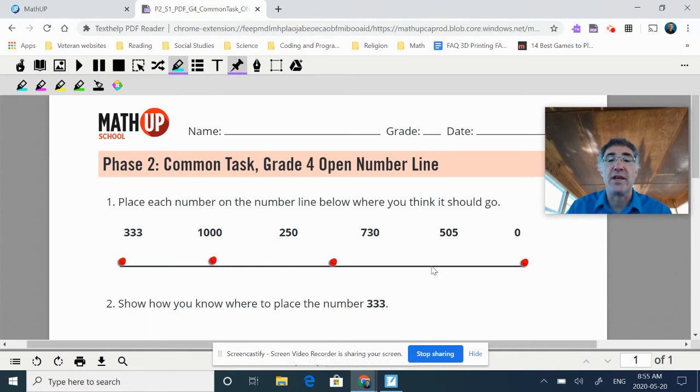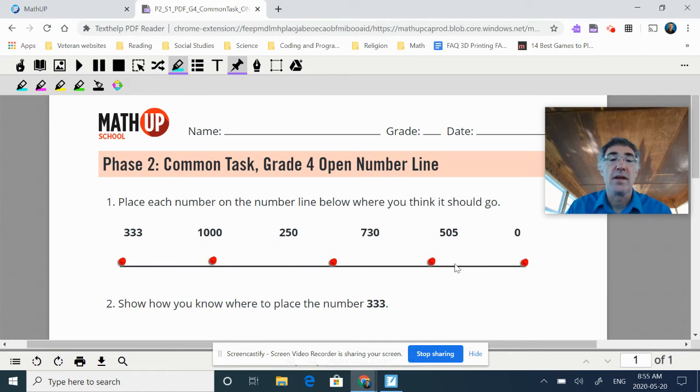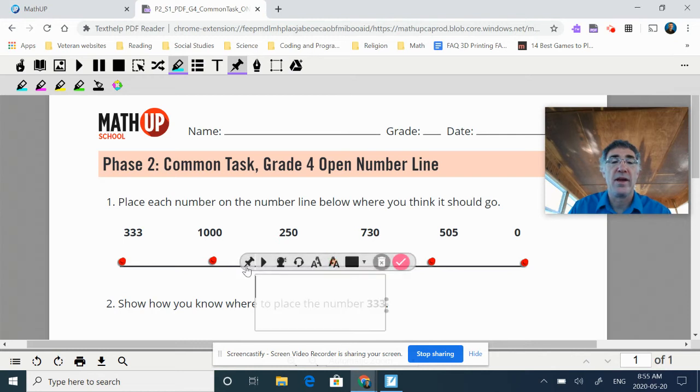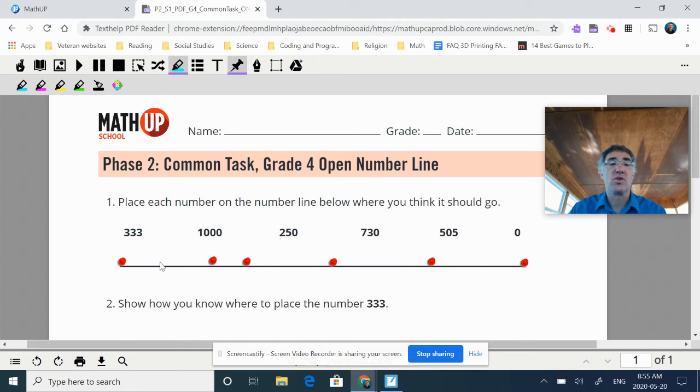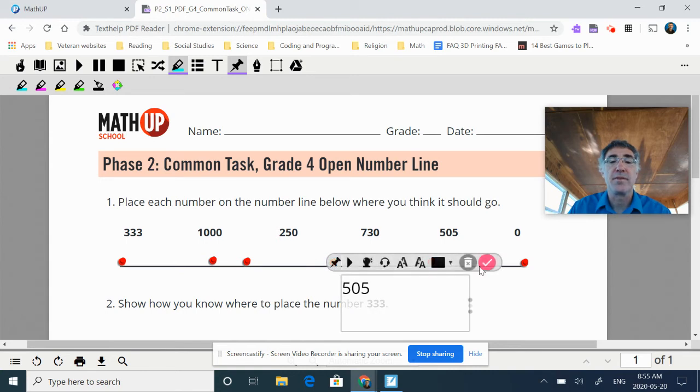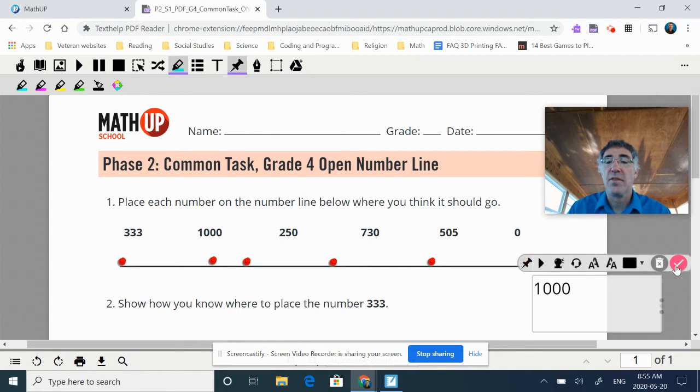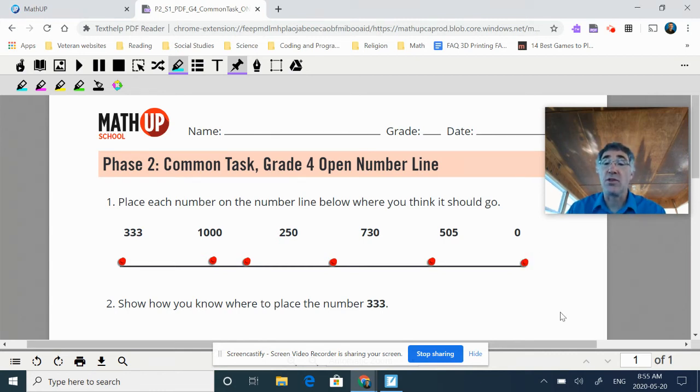And my 730 is going to kind of be halfway in between those. My 333, I said, was one third, which is going to put me about there. So I have my values of 0, 250, 333, 505, 730, and a thousand. But I can do a couple other things as well.